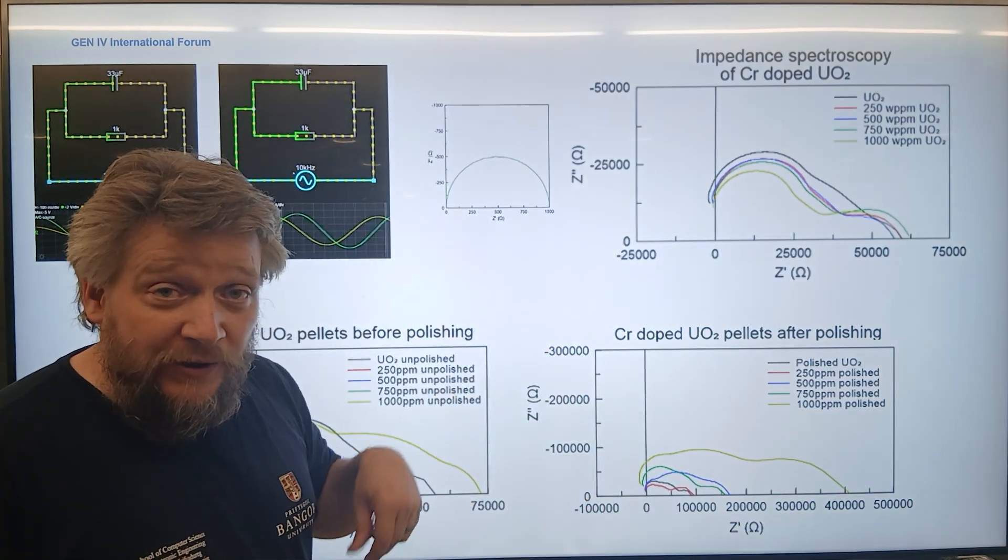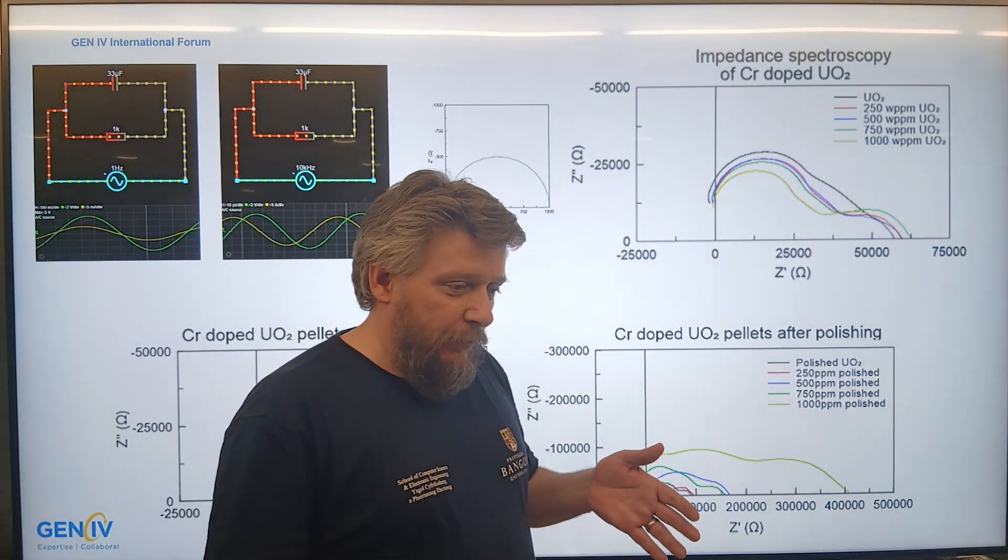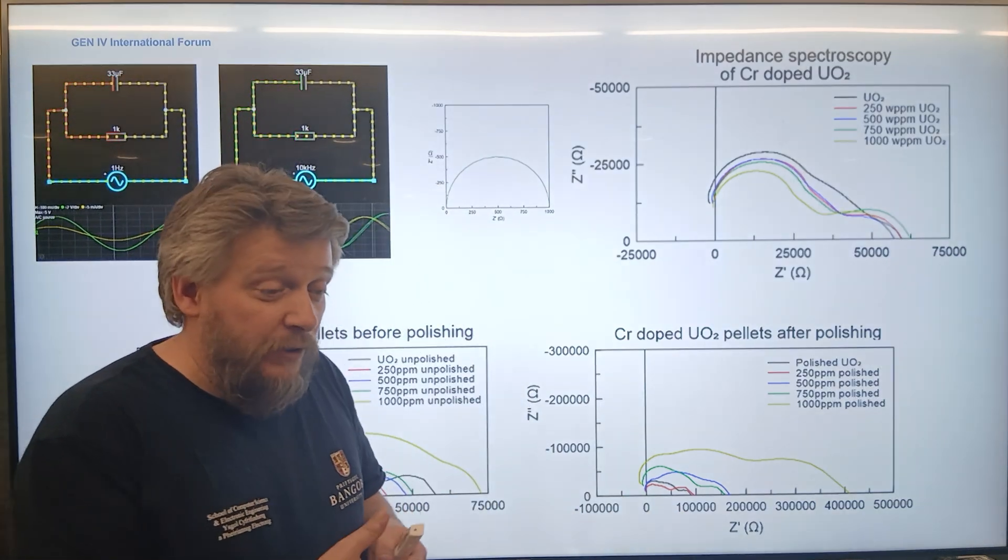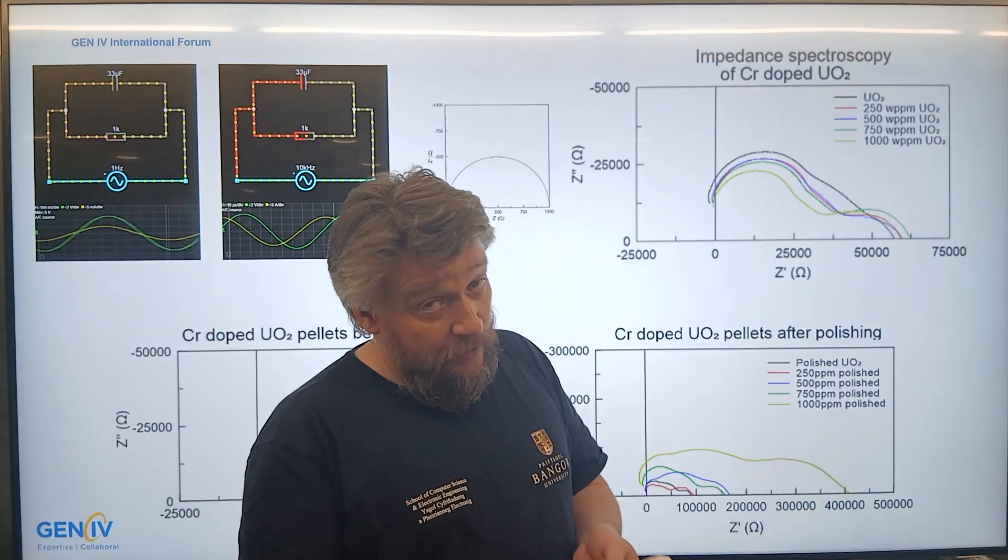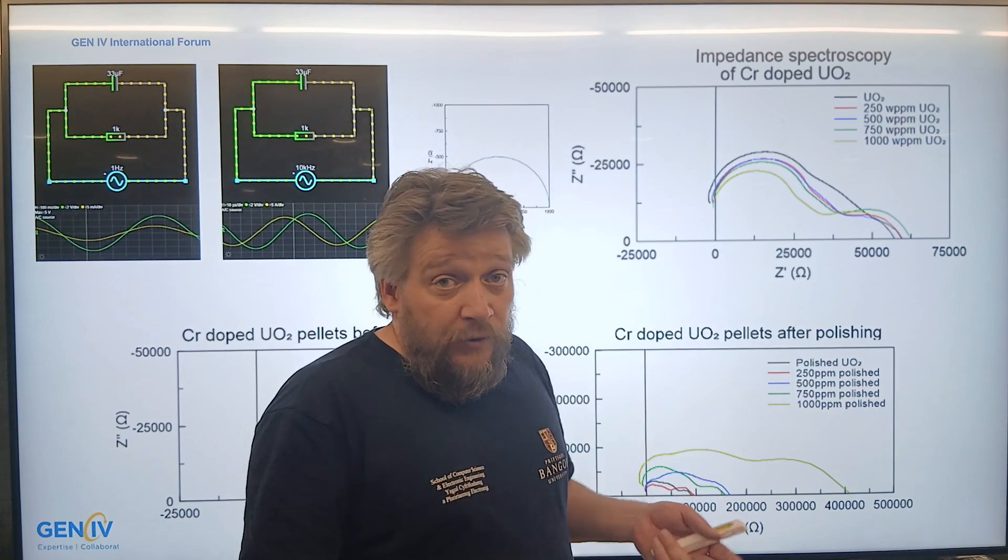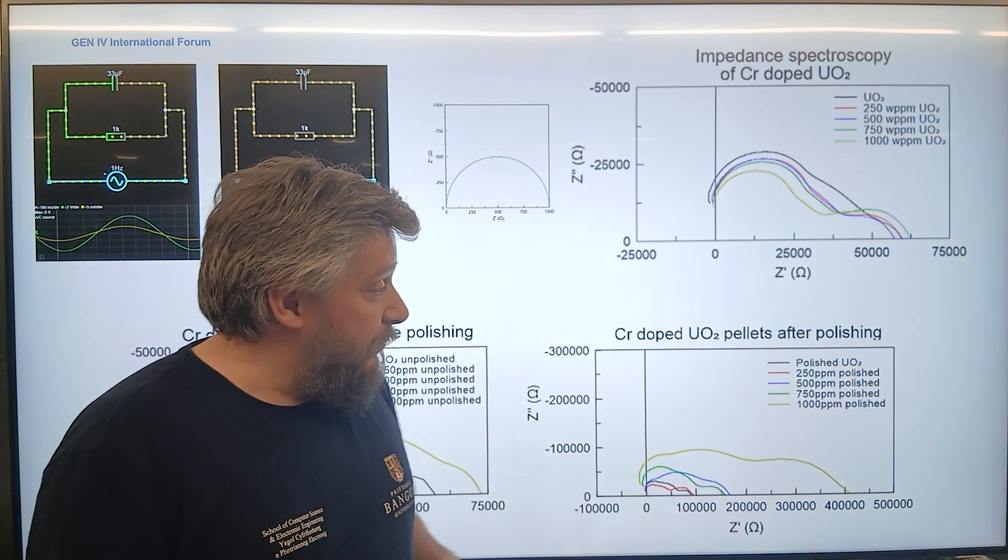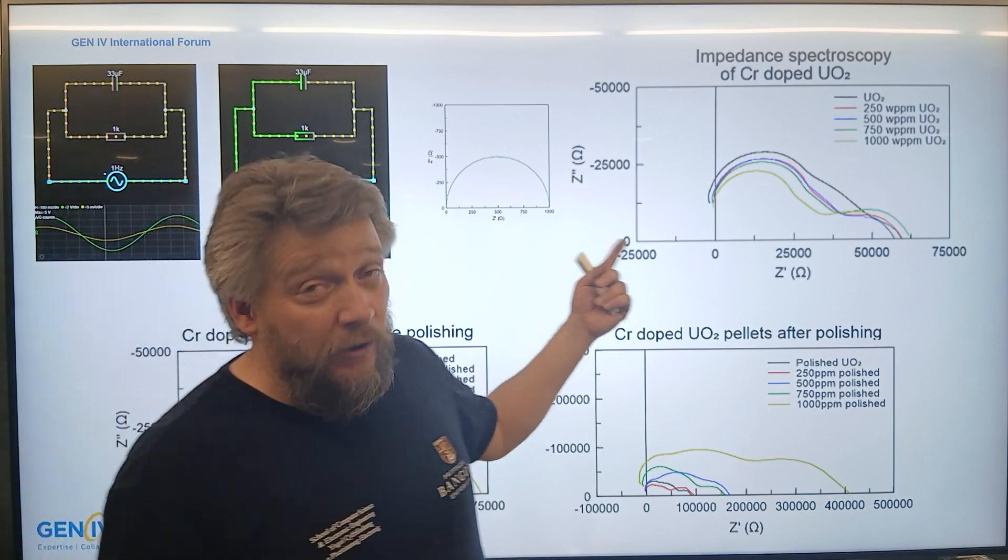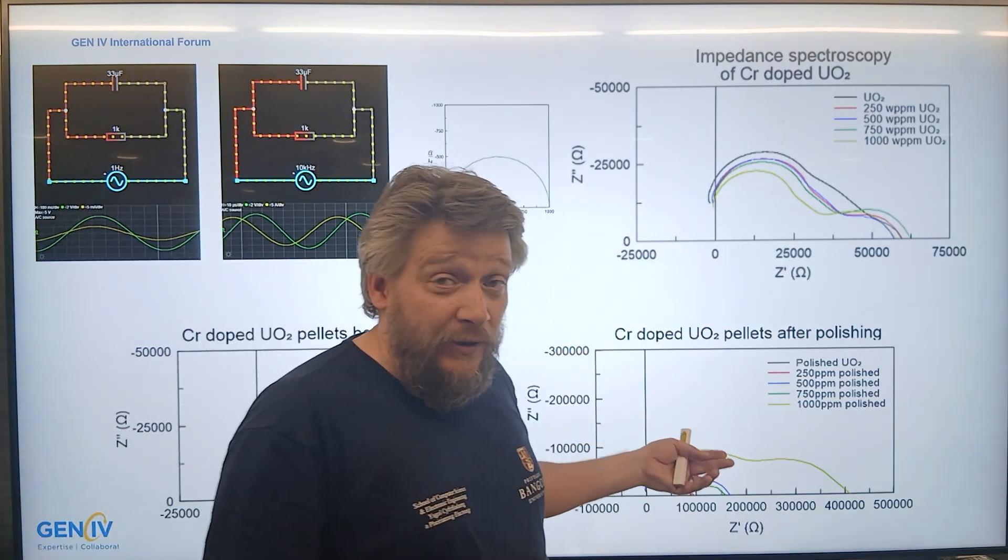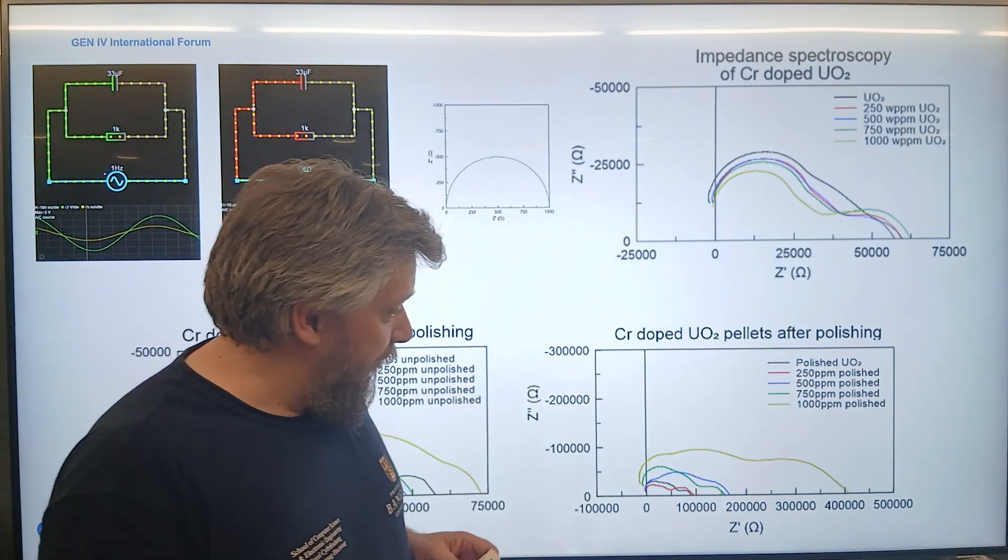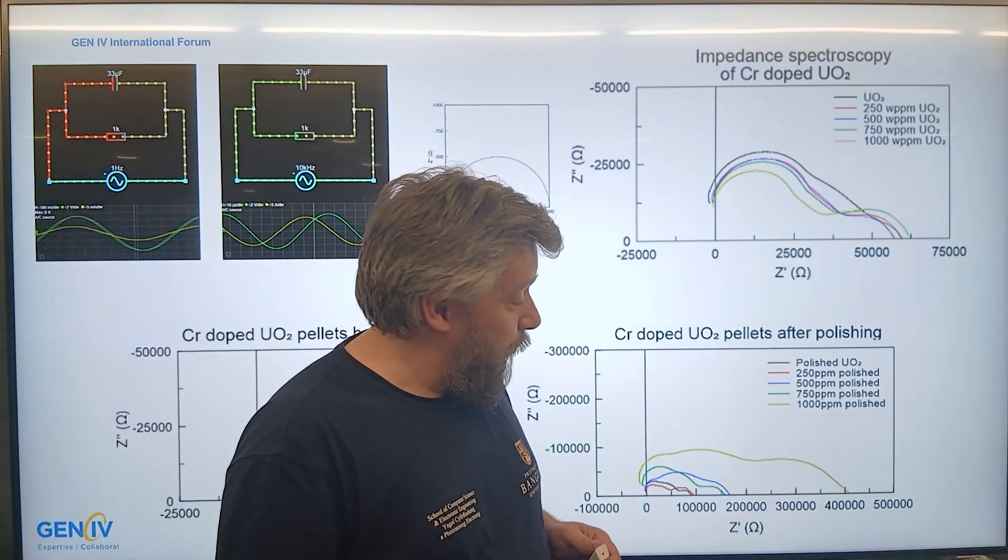Why I'm so excited about this is because it can be used as a fantastic way of quality control when you're making the material itself, when you're making the pellets. Because it's a non-destructive method of measuring the material and you can quickly analyze the material and make sure that you are getting what you intend to. You can see that there are no cracks or any deformities inside the material. So this is a really good aspect of impedance spectroscopy as well.